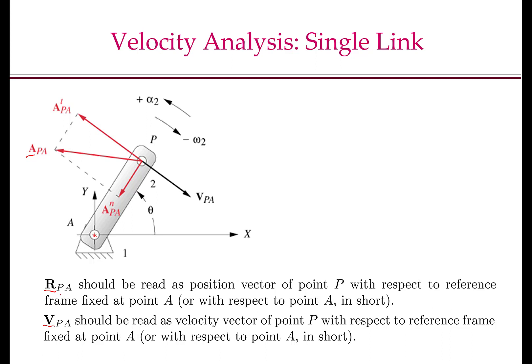For example, R_PA should be read as the position vector of point P with respect to the reference frame fixed at point A. In short, we say that R_PA is the position of P with respect to A. Similarly, V_PA is the velocity vector of point P with respect to the reference frame fixed at point A — or in short, the velocity of point P with respect to point A.